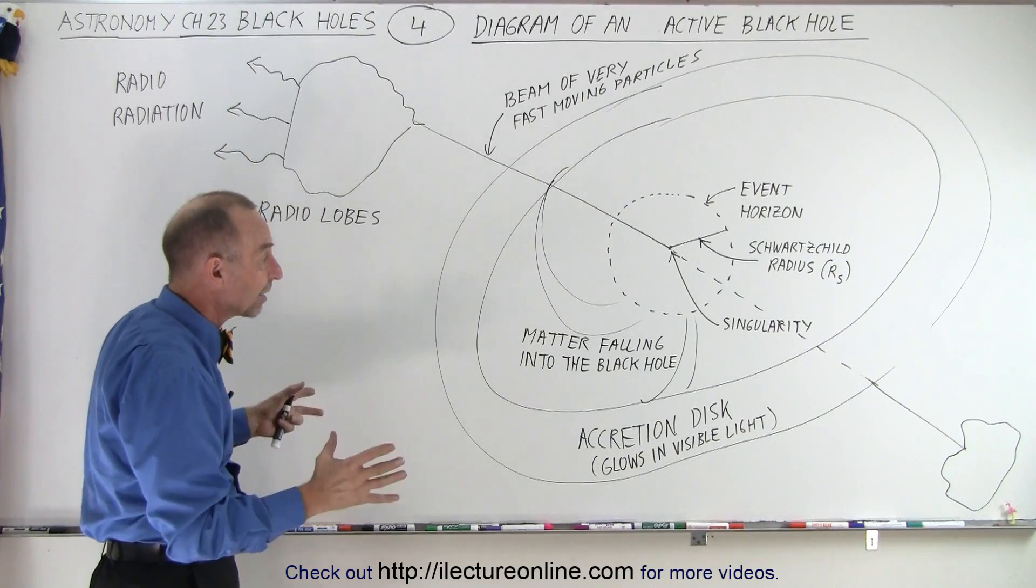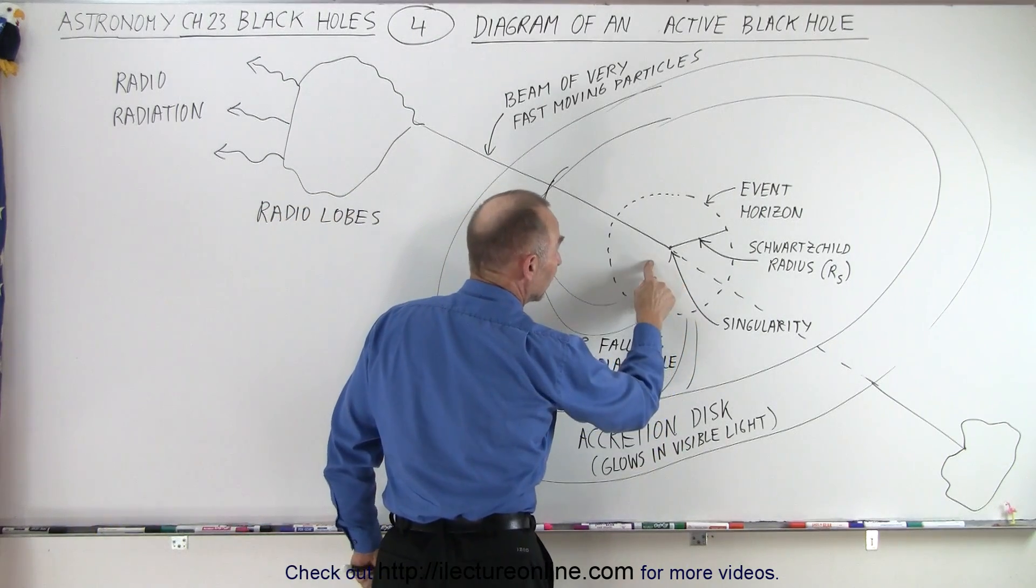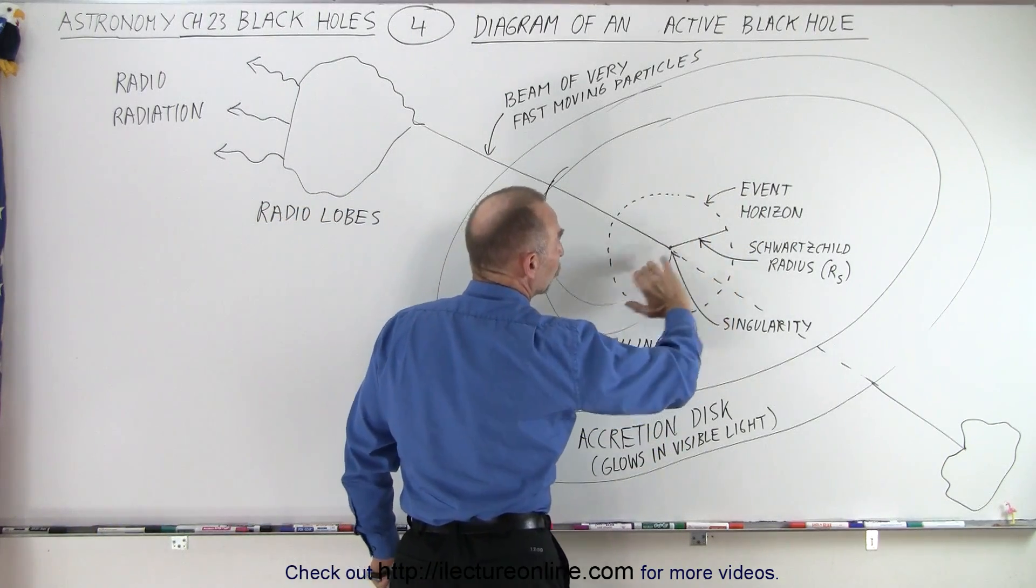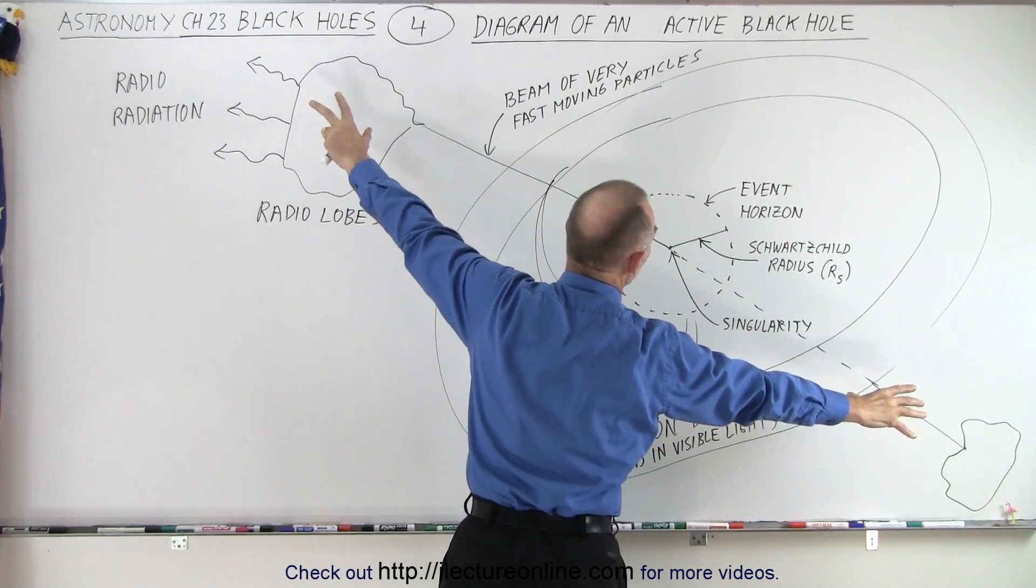Essentially, a black hole that's active now has five parts: the singularity, the event horizon, the Schwarzschild radius, the accretion disk around it, and the radio lobes.